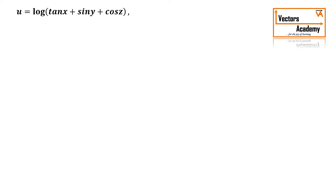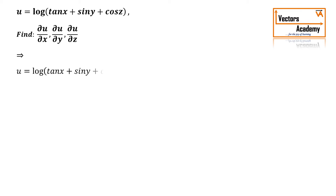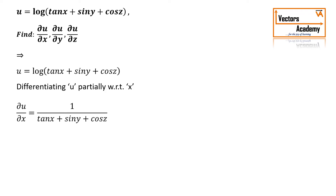Let's take a quick example to understand this better. Suppose u equals log of (tan x + sin y + cos z), and we need to find del u/del x, del u/del y, and del u/del z. First, finding the partial derivative of u with respect to x: the derivative of log of (tan x + sin y + cos z) is 1 upon (tan x + sin y + cos z) into the derivative of (tan x + sin y + cos z) by the chain rule.